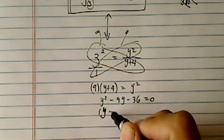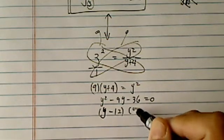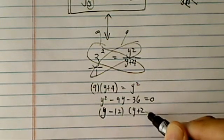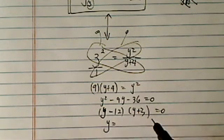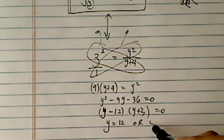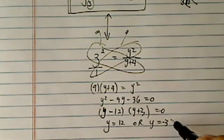So, y is equal to 12, and y plus 3. That gives me a minus 36 when I multiply, and when I add them, I have a minus 9. So, y is equal to 12, or y equal to minus 3.